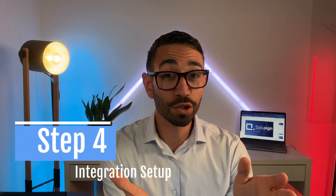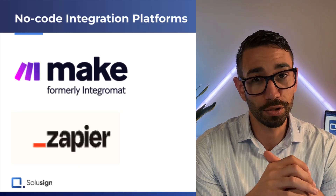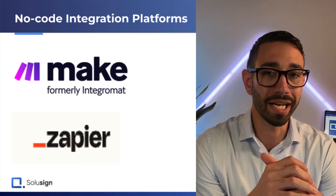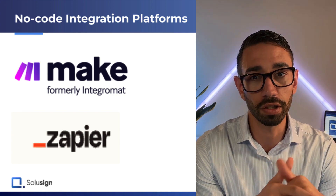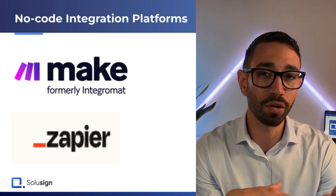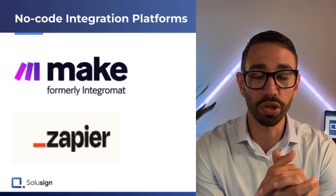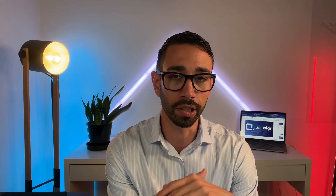Once you've mapped all your form fields to your database fields, proceed to the next step: building the integration that will move data between those mapped fields. To build your integration between different systems, you can use a code or no-code platform. At Solisign, we build all our client solutions using make.com. But if you are a total beginner — it's a no-code platform, by the way — I recommend going with zapier.com because it's much more user-friendly.